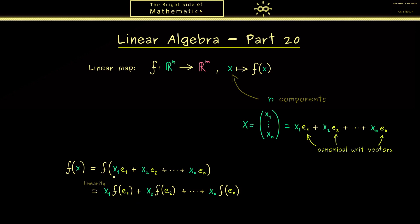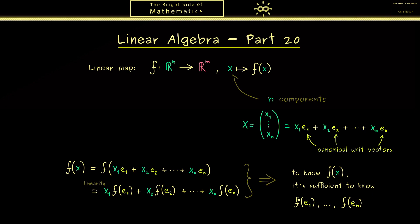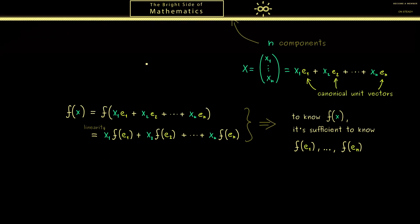This means if you want to know the vector f(x), it's sufficient to know the n vectors f(e₁), f(e₂), and so on. In other words, if you want to calculate all possible images of this linear map f, you just need to know what the images of the canonical unit vectors are. These images carry the same information as the whole linear map f, and exactly this insight leads us to the matrix representation of a linear map.